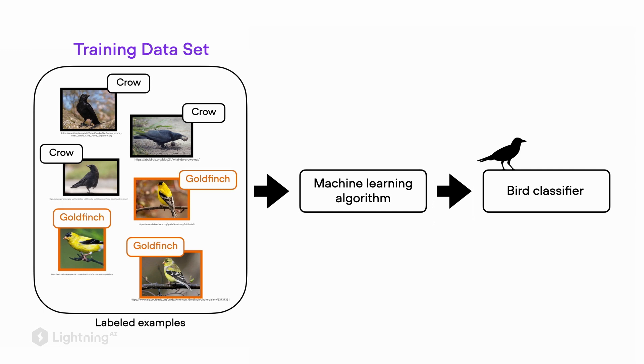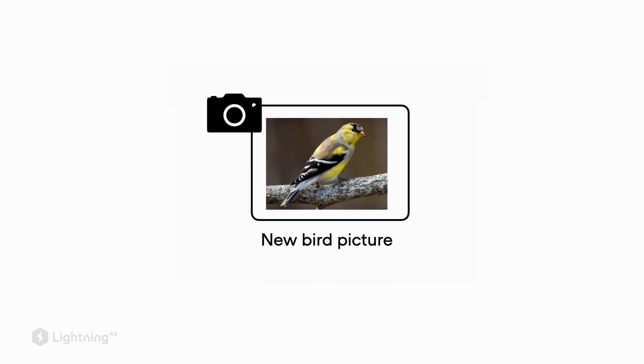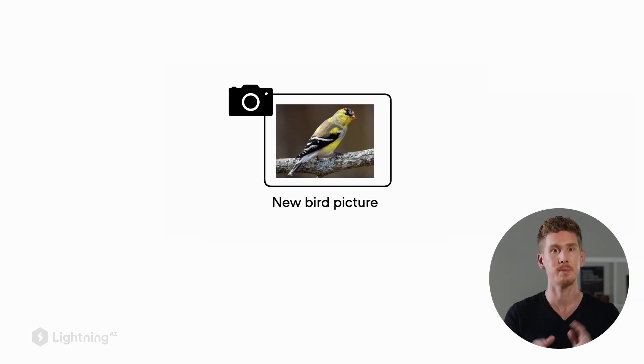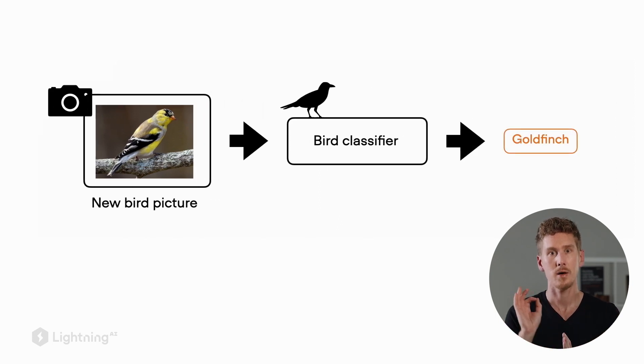The overall goal is to classify new bird pictures. Imagine you have a camera system in your garden to check which birds visit your bird feeder. With our bird classifier, we can provide new input images and make predictions. For example, given a picture of a goldfinch — this time without a label — our machine learning classifier can process this image and predict what type of bird we see.